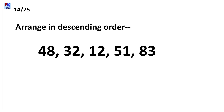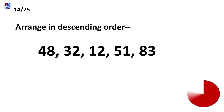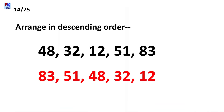Fourteenth question is: arrange in descending order — 48, 32, 12, 51, and 83. Descending order means arranging numbers from the biggest to the smallest, so the order would be 83, 51, 48, 32, and 12. This must have been fairly easy for you!